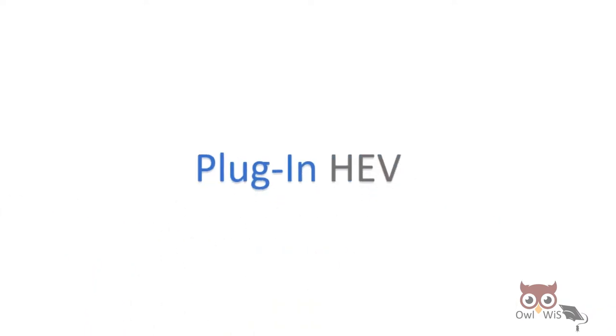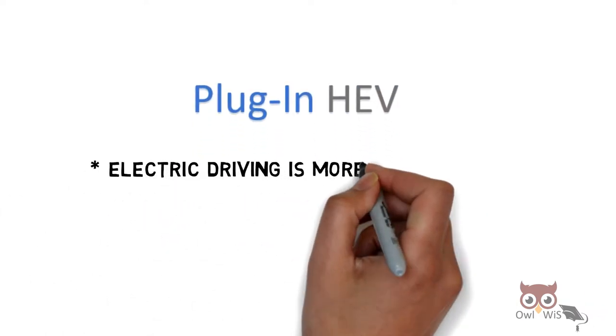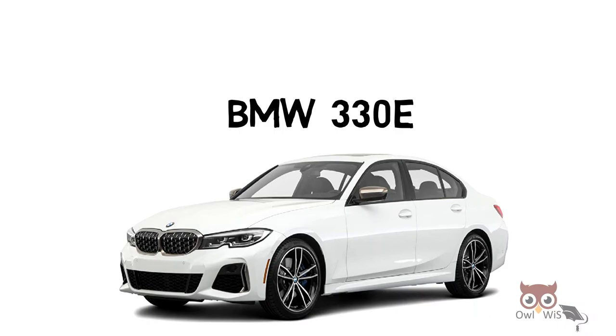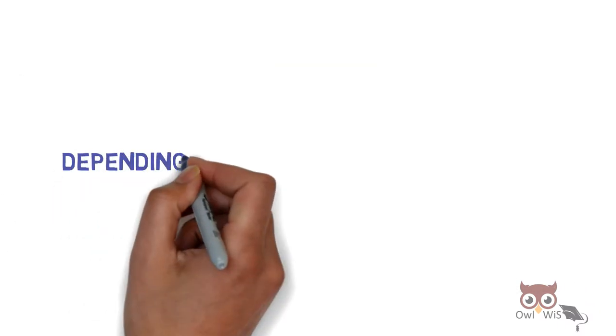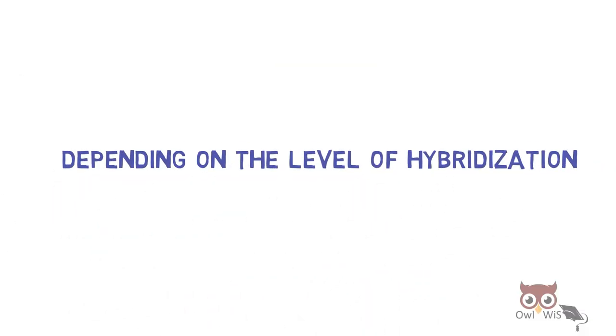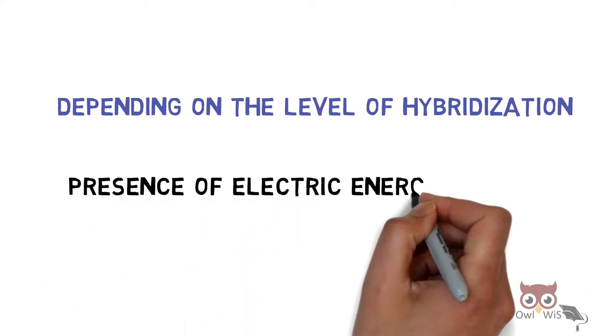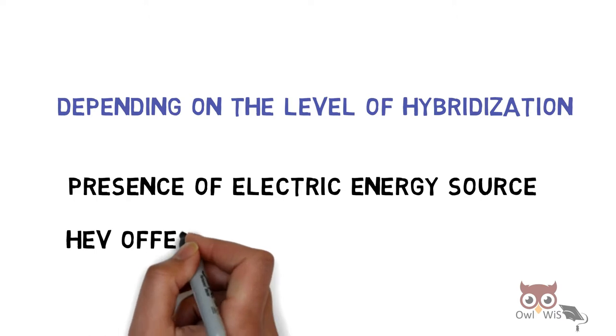Next is plug-in HEV. Here electric driving is more compared to other HEVs. Also, external power grid charging is possible. BMW 330e is an example of plug-in HEV. Depending on the level of hybridization presence of electric energy source, HEV offers additional functionalities.